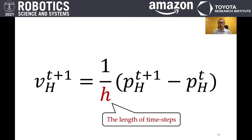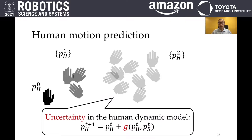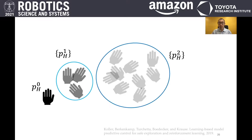Our system approximates the human velocity as the rate of change of position. With the model, our system can predict human motion in the future. Gaussian process quantifies uncertainty in the human dynamic model. Our system constructs ellipsoids to approximate the reachable human positions in the future.